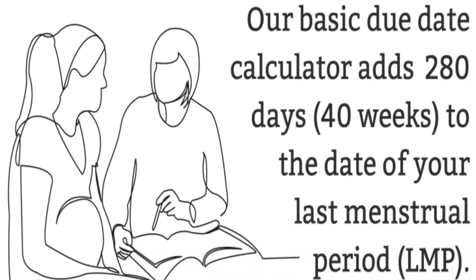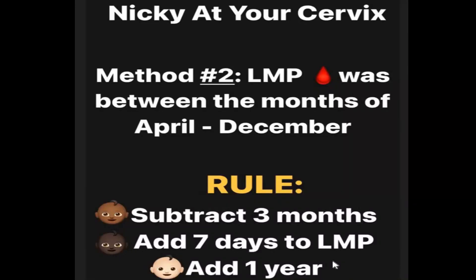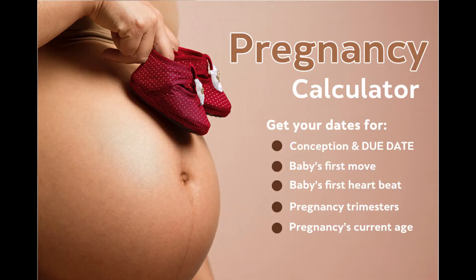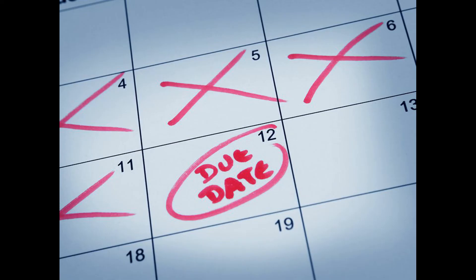The last method I'll tell you about is simply to add 280 days to the first day of your last menstrual period. You can use a calendar — say your LMP was November 5. Starting from there, you count and circle each day on the calendar until you reach 280, and that day would be the estimated delivery date. It can be a bit tedious, but it works because 280 days equals the average 40-week gestation period.